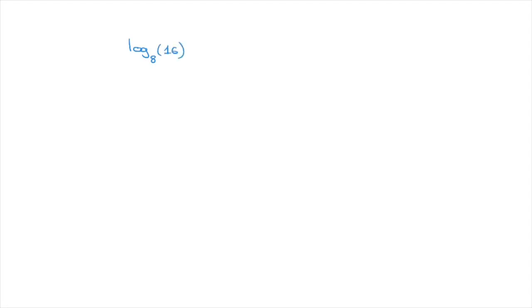Let's look at another example. Say we're asked to evaluate log base 8 of 16. Once more, we can start by saying this equals something, and we'll call that x. This is written in logarithmic form, so let's rewrite it in exponential form: 8 raised to the power of x equals 16. Now we have to write both sides as powers of the same number. We can see that 8 is not a power of 16, nor is 16 a power of 8. But after a little inspection, we realize that both 8 and 16 are powers of 2. Indeed, 8 is equal to 2 to the power of 3, and 16 is equal to 2 to the power of 4. Using those two results, we can rewrite this equation as 2 to the power of 3, all raised to the power of x, equals 2 to the power of 4.